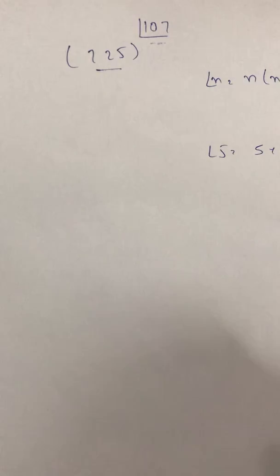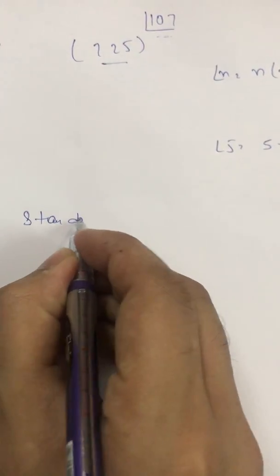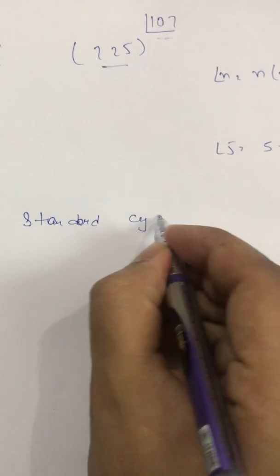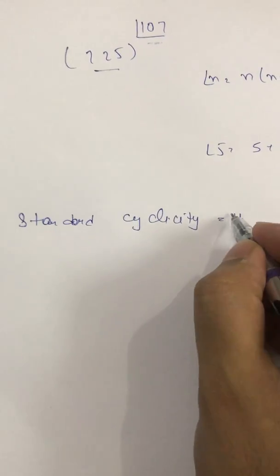How this is very much easy? Suppose, as we know the standard cyclicity is 4.